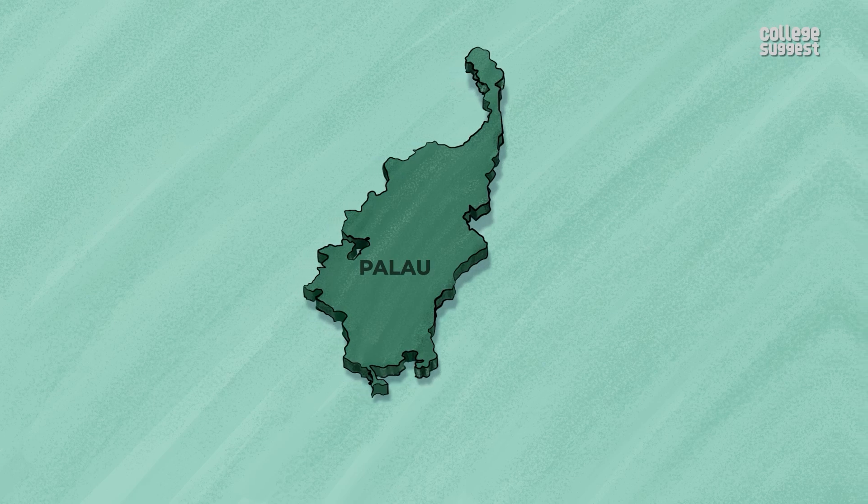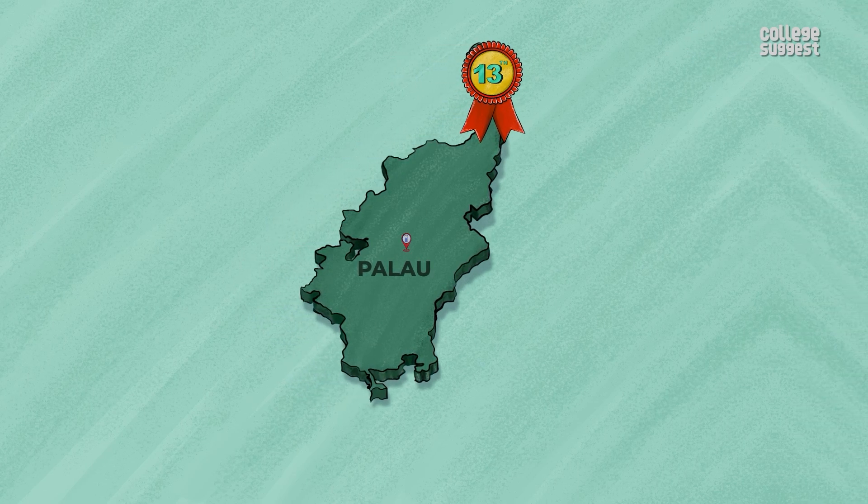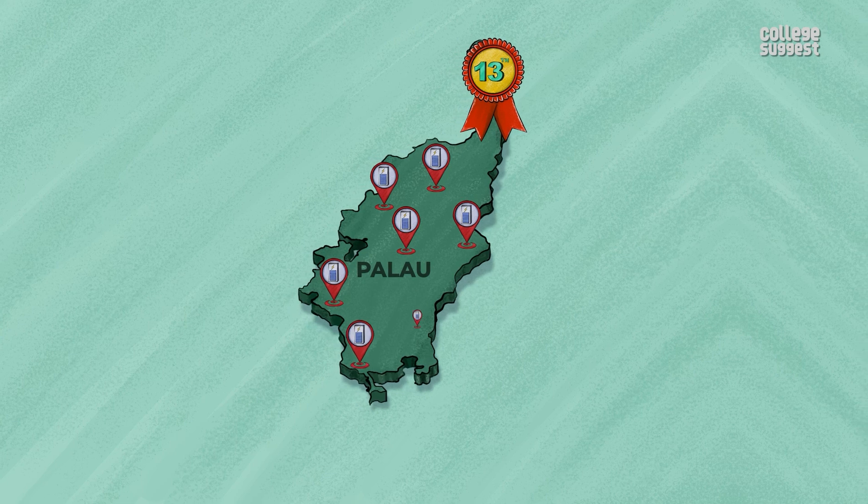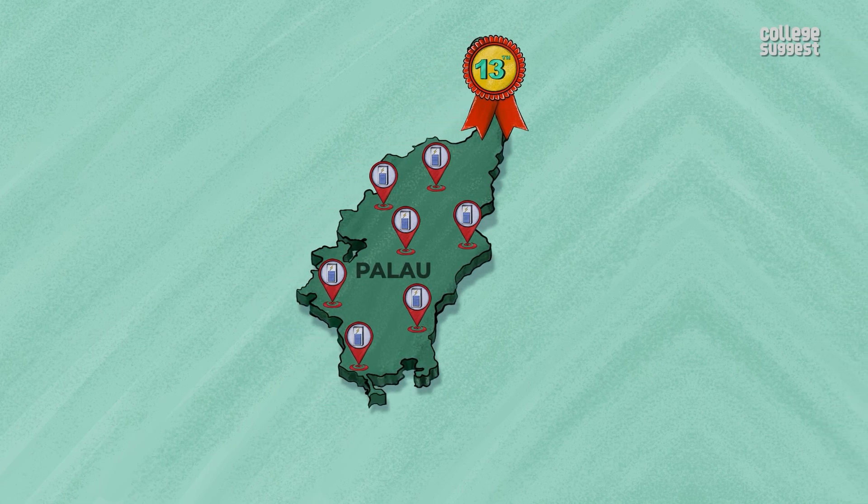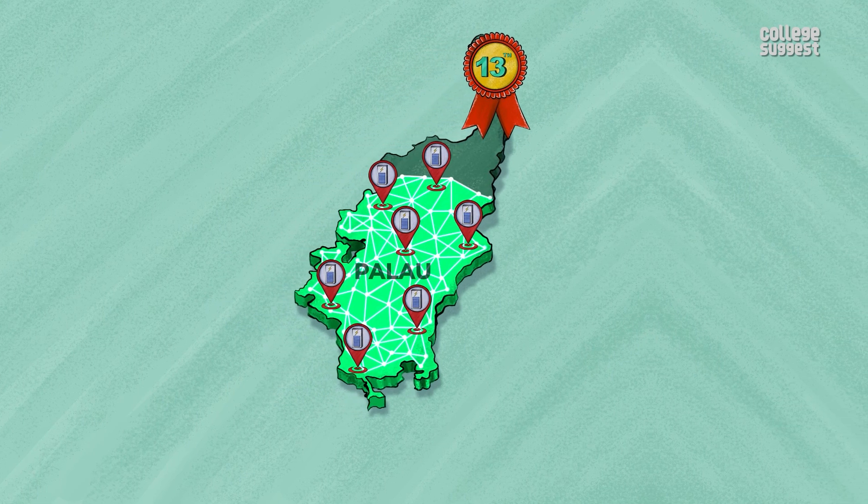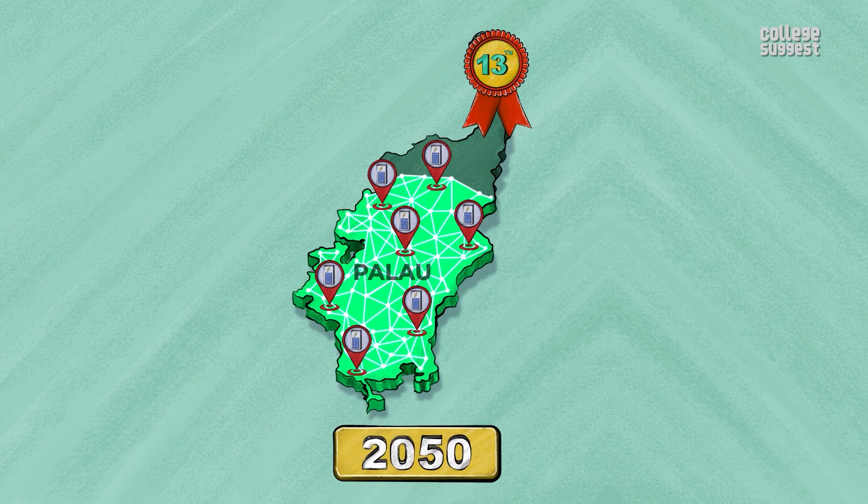Palau, a Pacific island and the 13th smallest country globally, has eclipsed into developing the world's largest microgrid as part of the nation's objective to transcend to 70% renewable energy by 2050.